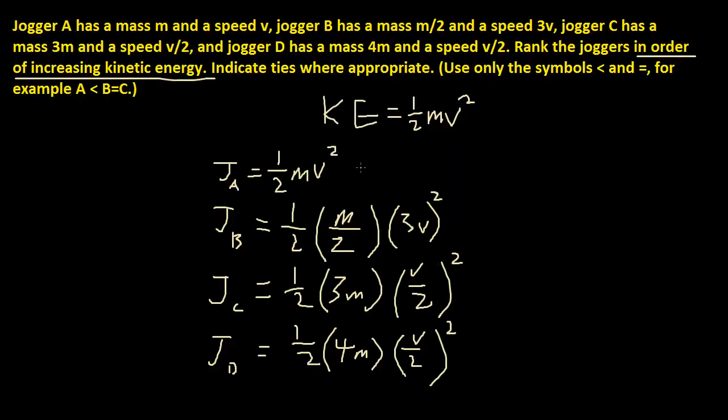Now let's simplify it. This is already simplified. So I'm going to start simplifying this one. If you multiply, this is going to be m over 2 times 2 is 4. And 3 times, 3 times is 9. So this is going to be 9m over 4 times v squared.